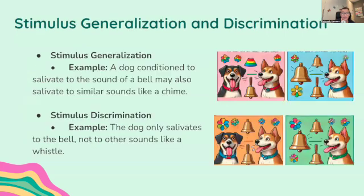Next, stimulus generalization and discrimination. Stimulus generalization is the tendency to respond to stimuli that are similar to the conditioned stimulus. For example, a dog conditioned to salivate to the sound of a bell may also salivate to similar sounds like a chime. Stimulus discrimination is the learned ability to distinguish between the conditioned stimulus and other stimuli not associated with the unconditioned stimulus — for example, the dog only salivates to the bell and not to other sounds like a whistle.